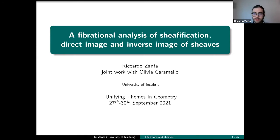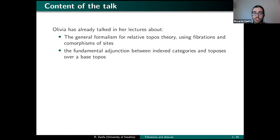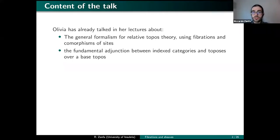I would briefly remind you what she talked about. She presented you with this general formalism for relative topos theory, which we've been working with using fibrations and comorphisms of sites. This formalism emerged in an article by Jean Giraud of 1972, but was not exploited at all in the following years.